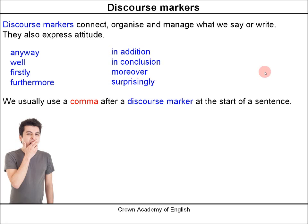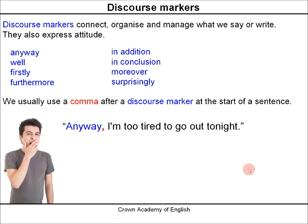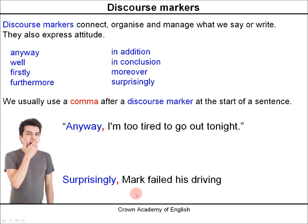Example: 'Anyway, I'm too tired to go out tonight.' So after 'anyway' there is a comma to represent a pause before the rest of the sentence. 'Surprisingly, Mark failed his driving test.' Again, we have a comma here. Notice how 'surprisingly' expresses the attitude of the person speaking — it tells us we are surprised that Mark failed his driving test, perhaps because we were expecting him to pass.